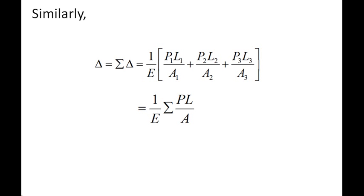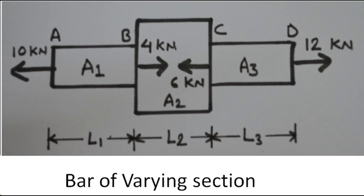The total deformation delta for such a bar equals (1/E) times (P1·L1/A1 + P2·L2/A2 + P3·L3/A3) for a bar with three sections. For n sections, the formula is delta equals (1/E) times the summation of Pi·Li/Ai, which can be written as (1/E)·Σ(PiLi/Ai).